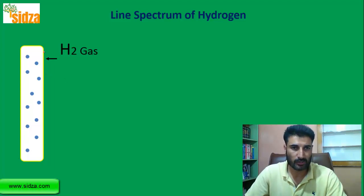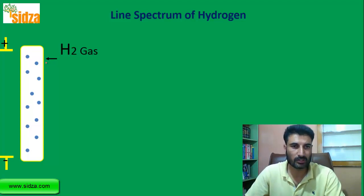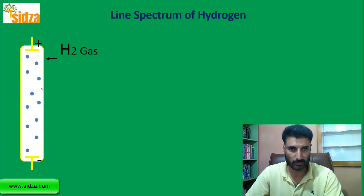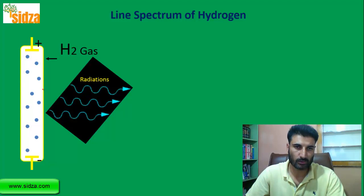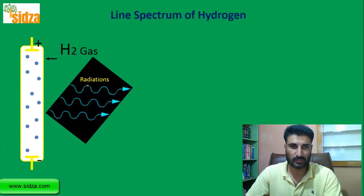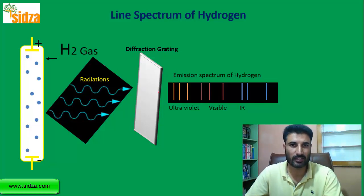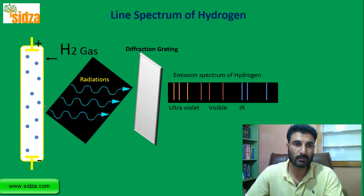If you take a discharge tube and fill it with hydrogen gas and then pass electric discharge through this hydrogen gas, the hydrogen gas will emit different kinds of radiations. When we analyze those radiations using a diffraction grating, we find a particular spectrum — which tells us what different frequencies are actually being emitted by the hydrogen gas.